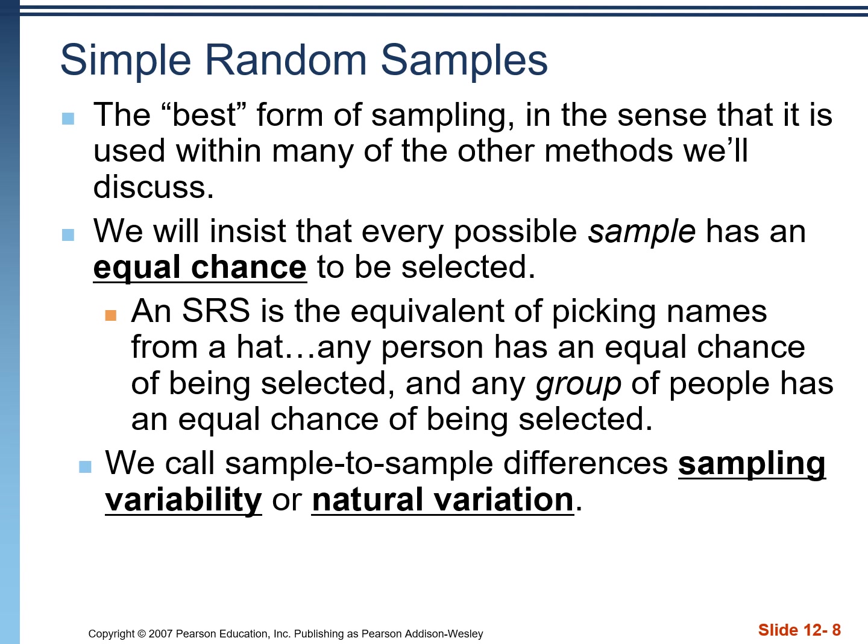There are many different types of sampling methods. The most important one is called a simple random sample, with emphasis on 'simple' — this is the equivalent of putting everybody's name in a hat and picking out random names. Any individual person can be selected, and any group of people can be selected. For instance, picking 10 names might yield 10 females, 10 males, or the 10 people who sit in the very front. Differences across repeated samples are called sampling variability, or natural sampling variation.